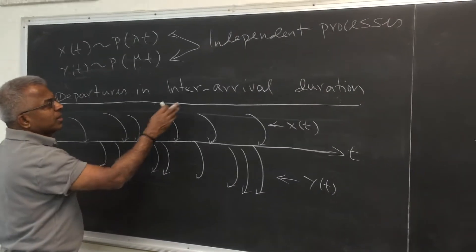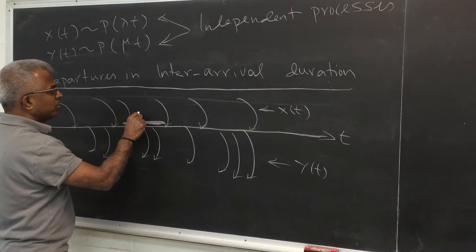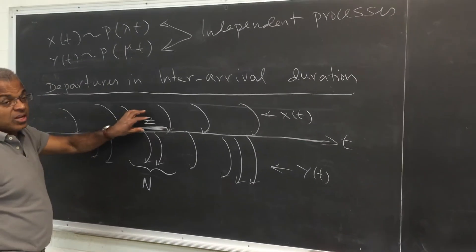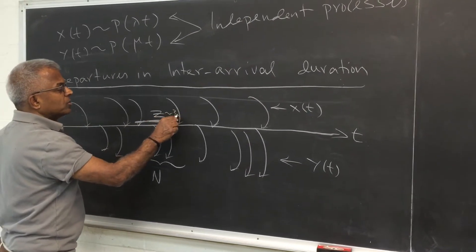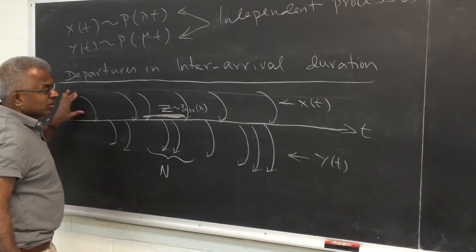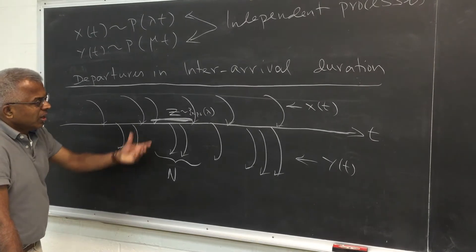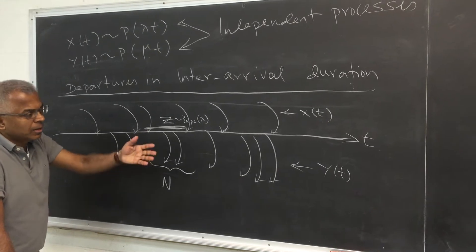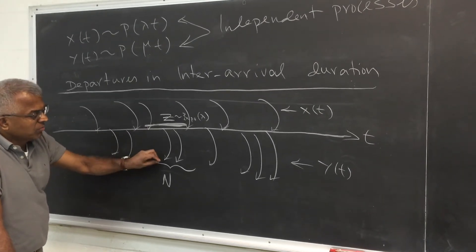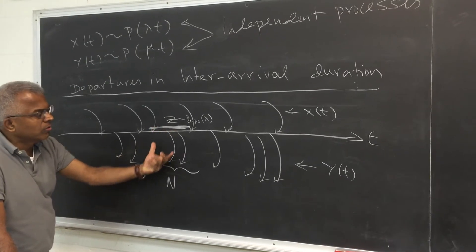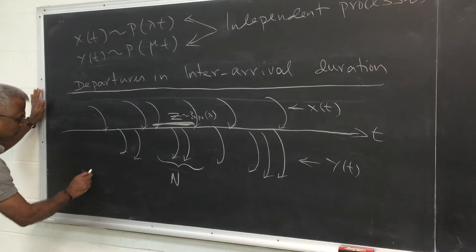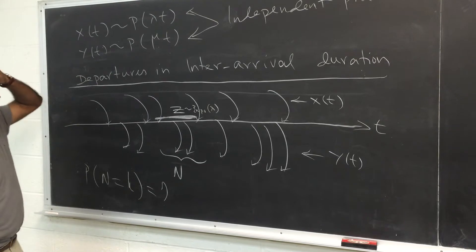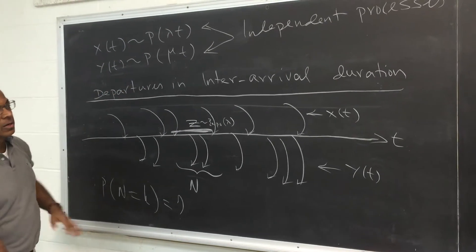What we are interested is, if you take any inter-arrival duration here, let me call this to be z, and we want to count the number of departures. So remember z is random. Z of course we know is exponential with parameter lambda because we are referring to the x process. And so during this random duration, things could be independently happening on y of t, which are departures. And we want to start counting them as 1, 2, 3, but only over this interval. So essentially we want probability of n equal to k. This is what we are interested. So that's what we mean by departure statistics in inter-arrival duration.